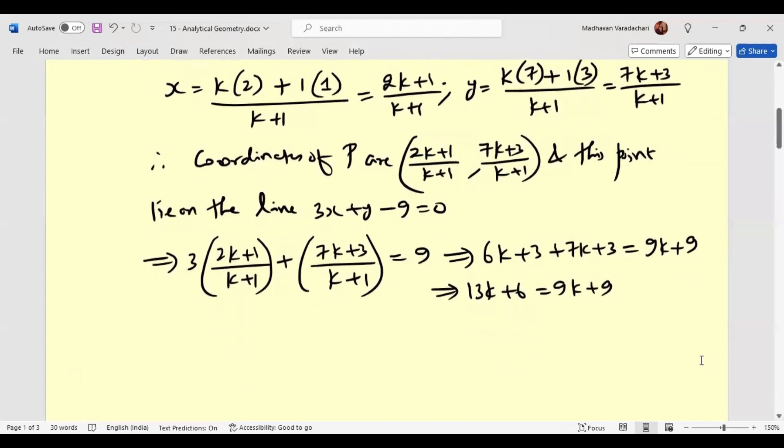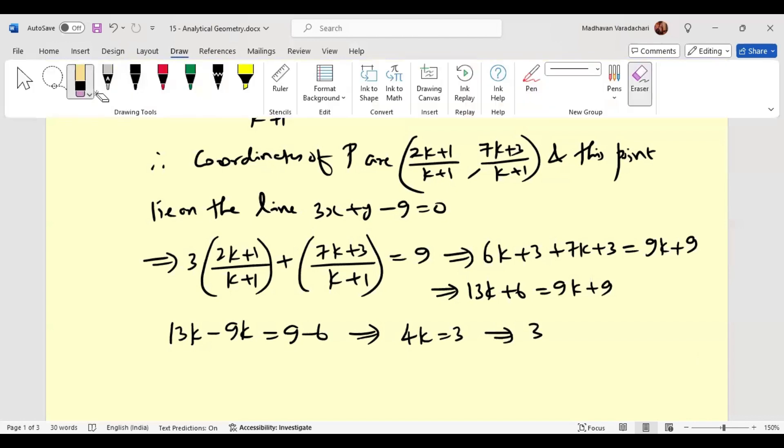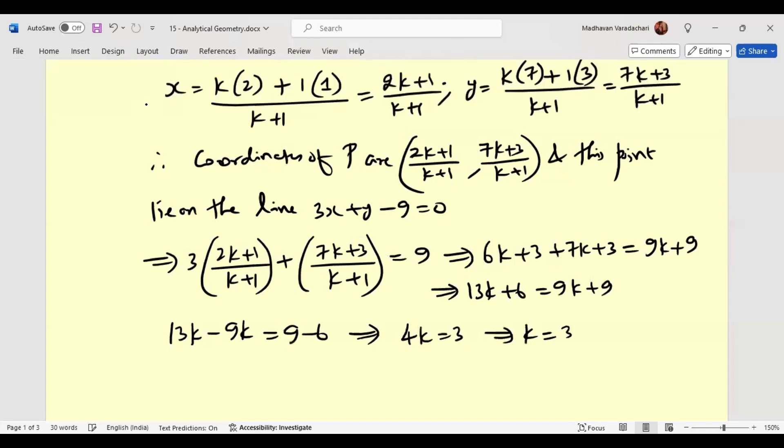Now we will bring that 9k to the left hand side. We will have 13k minus 9k. That means 4k is equal to 3, or we can say k is 3 by 4.